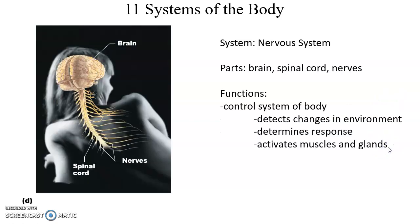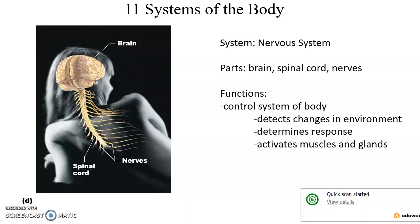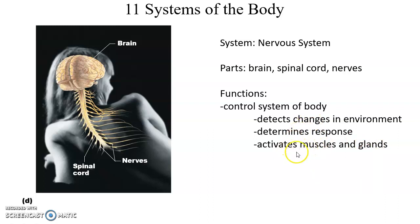The nervous system is made up of the brain in the skull, the spinal cord in the vertebral cavity, and the nerves that stretch to the structures of our body. Its functions include detecting changes in our environment — externally or internally — sending that information to the central nervous system to determine a response, then commanding muscles to contract or glands to secrete as needed.